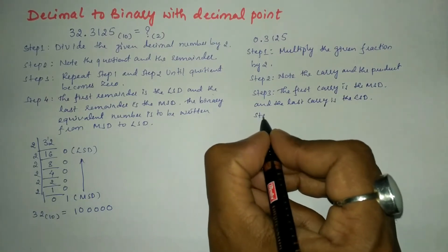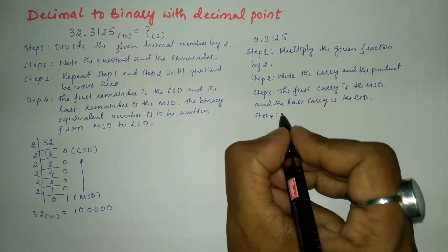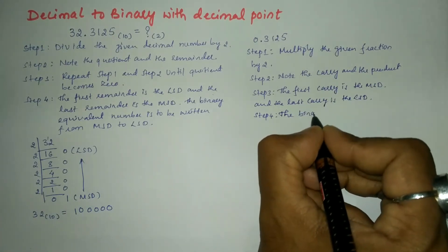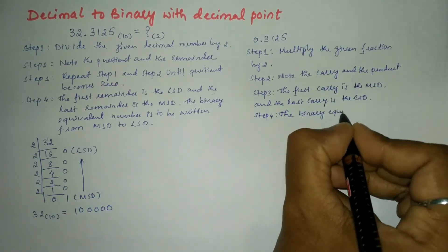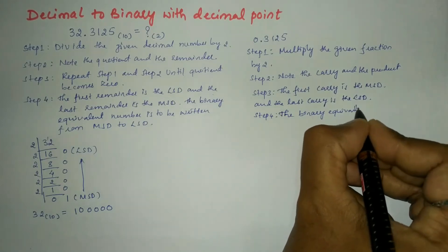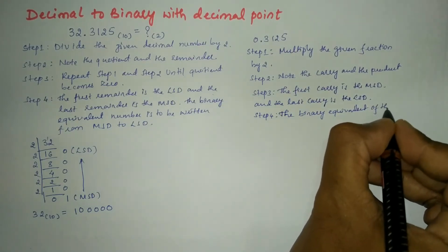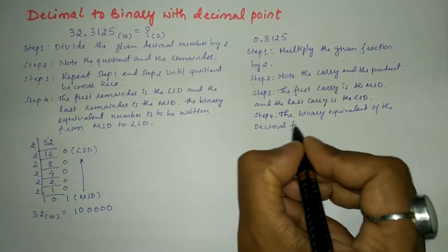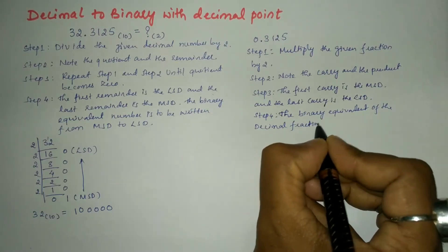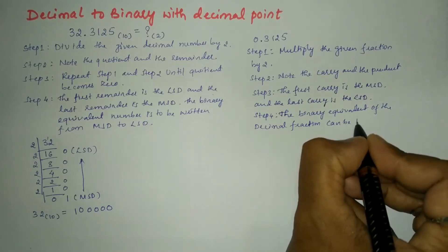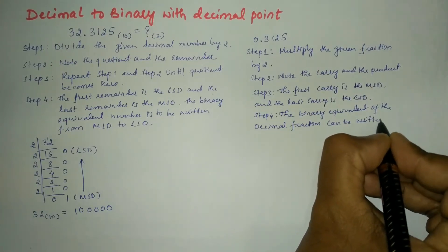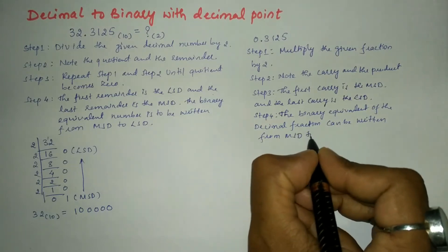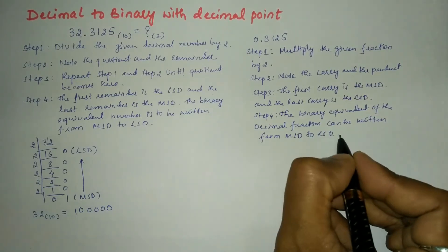Step 4: the binary equivalent of the decimal fraction can be written from most significant digit to least significant digit.